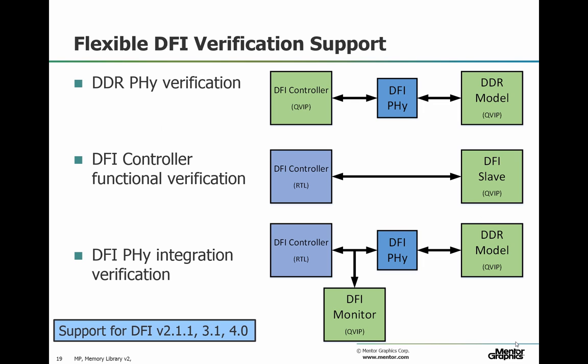We also have complete support for the DFI interface. This can be used for standalone PHY verification — that's probably how it's used most often. It can also be used for verifying a memory controller that doesn't have a PHY. In this case, the Cruster Verification IP supplies a slave memory model, which while configurable, doesn't model any particular device, but can be very useful if you're designing or using memory controller IP that can be used with many different PHYs. And finally, if you have a DFI memory controller with one or more PHYs from different sources, you can put a monitor on the DFI interface to identify bugs in your PHY integration.